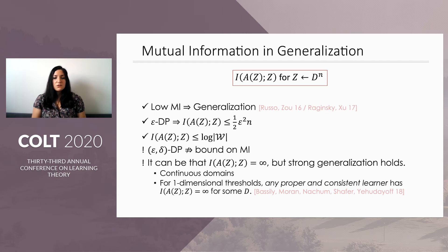So Vasily, Moran, Nahum, Schaefer, and Yehudayev recently proved that for the natural class of thresholds on the real line, any proper and consistent learner has unbounded mutual information, although this class has VC dimension one, so strong generalization holds.